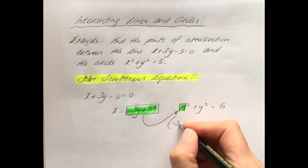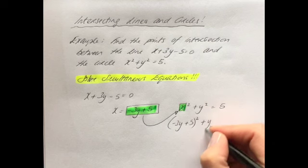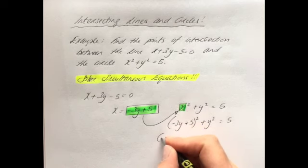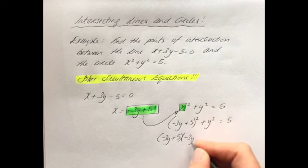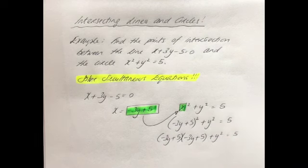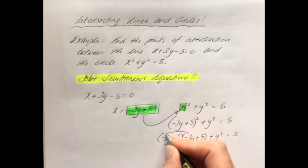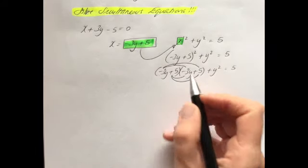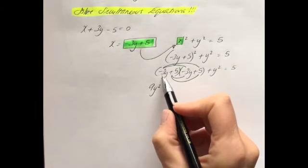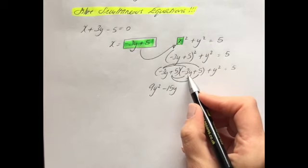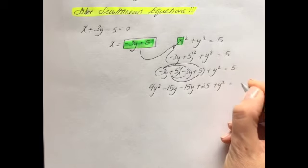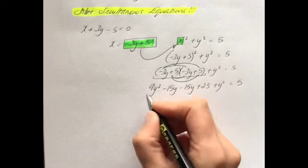So that gives me minus 3y plus 5, all to be squared, plus y squared equals 5. Now you've got to be careful here because we have quite a bit of multiplying out to do. Remember, when you've got brackets squared, it means minus 3y plus 5 by minus 3y plus 5 — double brackets. Multiplying out: minus 3y by minus 3y is plus 9y squared; minus 3y by 5 is minus 15y; 5 times minus 3y is minus 15y; and plus 5 times plus 5 is plus 25.